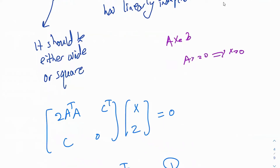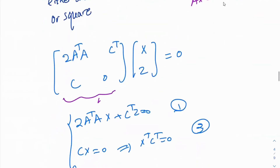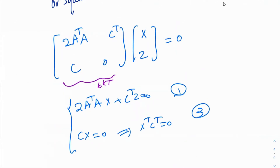Here x is the vector. The same thing we should do here. I'm going to write this KKT matrix times xz equal to 0, and I want to see under what case x equal to 0 and z equal to 0 are the only solutions. Let's go ahead and multiply that. We get 2A transpose A times x plus C transpose z is equal to 0 — that's the first equation. And C times x is equal to 0 — that's the second equation.